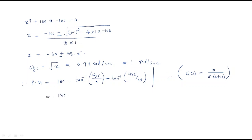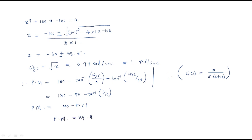At the gain crossover frequency, the phase of G(s) = 10/[s(s+10)] is: angle G(jω) = -90° - tan⁻¹(ω/10). Substituting ωgc = 1: phase = -90° - tan⁻¹(1/10) = -90° - 5.71°. Therefore the phase margin = 180° + (-90° - 5.71°) = 84.29 degrees.